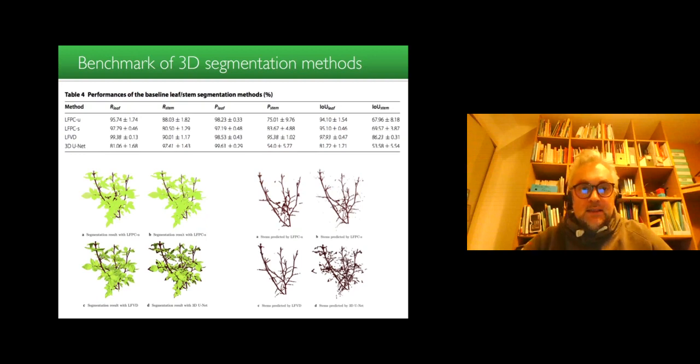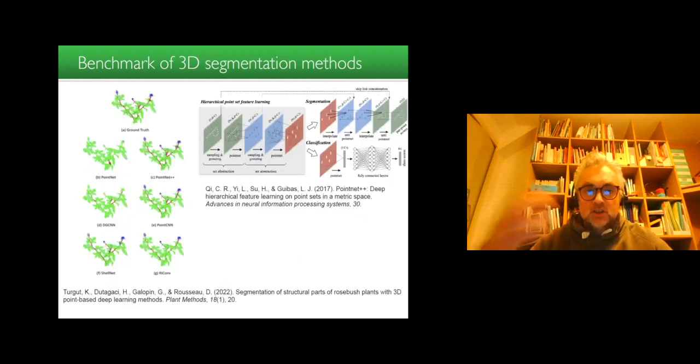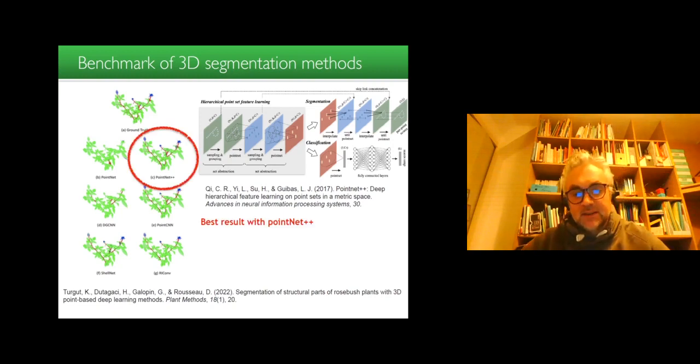So what we did is that we benchmarked 3D segmentation method, uncrafted ones, but also deep learning ones, and we compared the performance of these methods on our dataset, either on the entire plant or on subparts such as the stem here. 3D U-Net did not appear to be the best method compared to the uncrafted ones in this dataset. However, when we shifted to point cloud deep architecture, it happens that indeed deep learning architecture based on point cloud could produce the best result. In this case it was PointNet++ that was found to be the best.